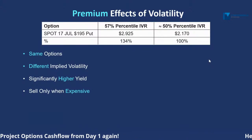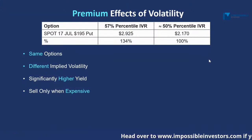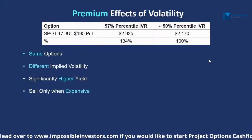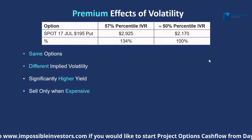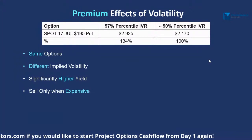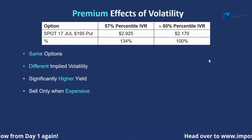Same option, different implied volatility — you're going to get a 34% higher yield. If you're going to sell a product, are you going to sell it when it's more expensive or when it's cheap? Most rational people will sell it when it's more expensive — and that's the whole basis of this sharing.